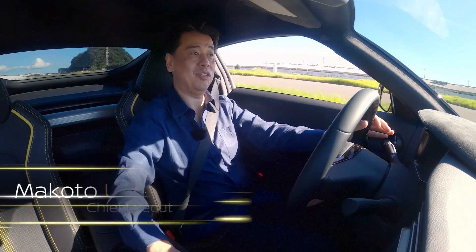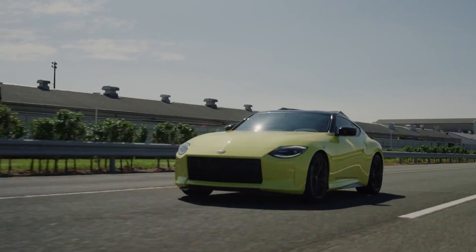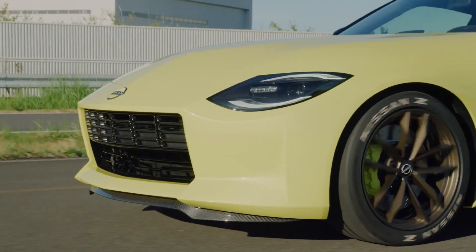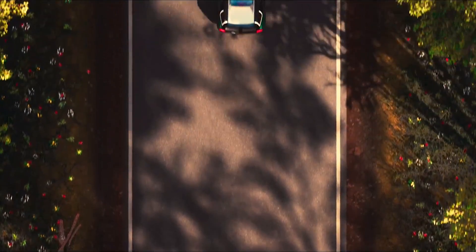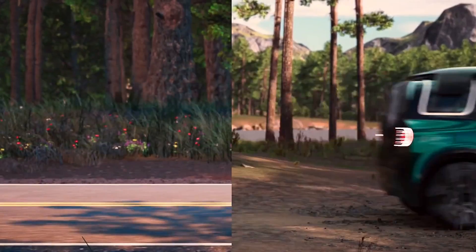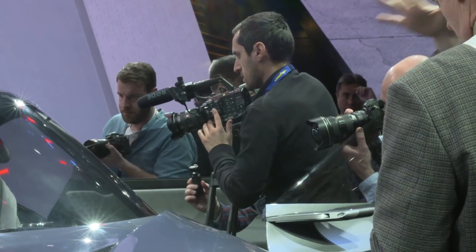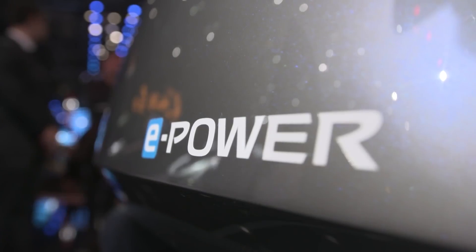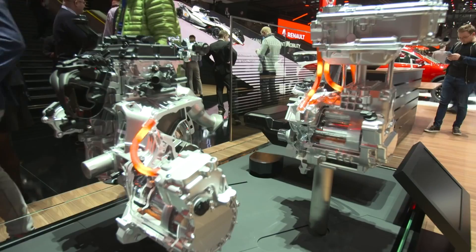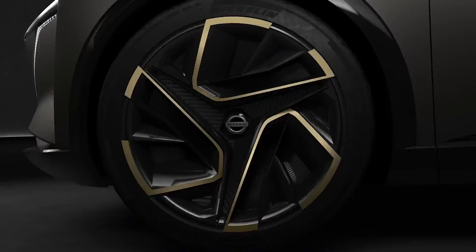In conclusion, Nissan CEO Makoto Uchida's revelation of a shift to hydrogen fuel cells and a reduced emphasis on electric vehicles marks a significant turning point for the company and the wider automotive landscape. The decision reflects Nissan's desire to address the limitations of electric vehicles and explore alternative technologies that offer longer ranges and faster refueling times.